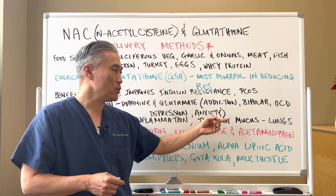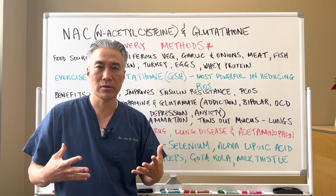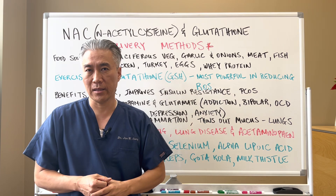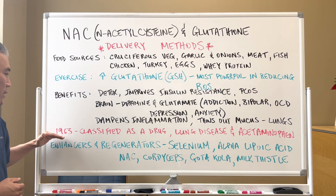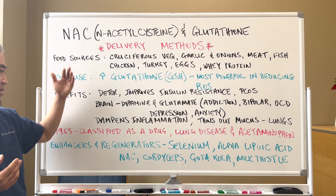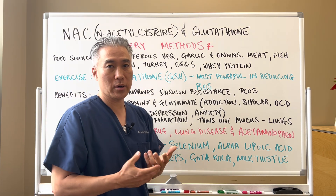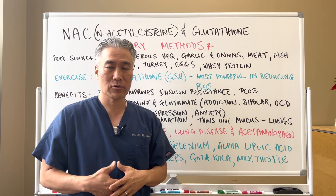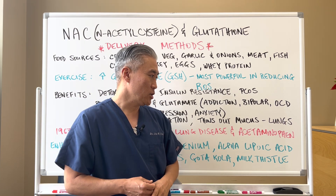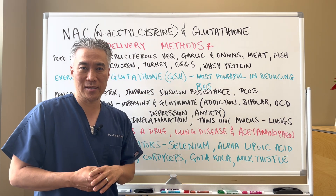NAC and glutathione also have very important anti-inflammatory effects. They dampen inflammation by impacting some of the cytokines. They help to thin out the mucus of the lungs, so if you have a lung infection or cough, it can definitely help clear that out. In 1963, glutathione or NAC was classified as a drug, and they used it for lung problems, chronic lung issues, and also for acetaminophen overdose. They still use it to this day.